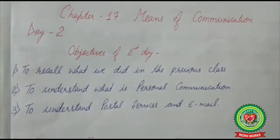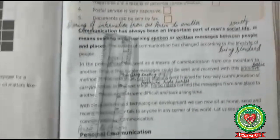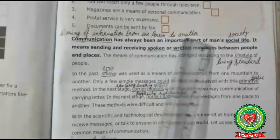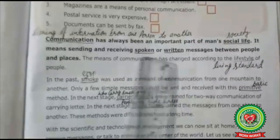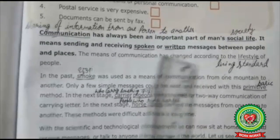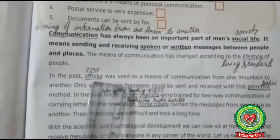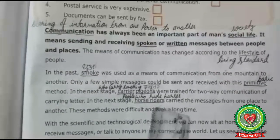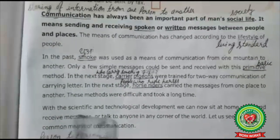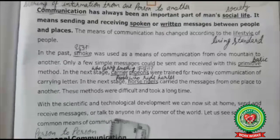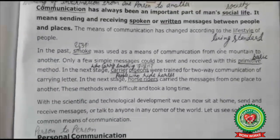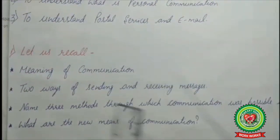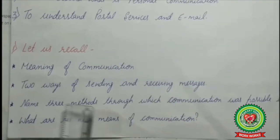The meaning of communication is the sharing of information from one person to another. It has two ways - spoken or written - and three methods: the smoke method, carrier pigeons method, and horse riders method. We also discussed how science and technology made it possible for us to sit at home and talk to anybody in any corner of the world.